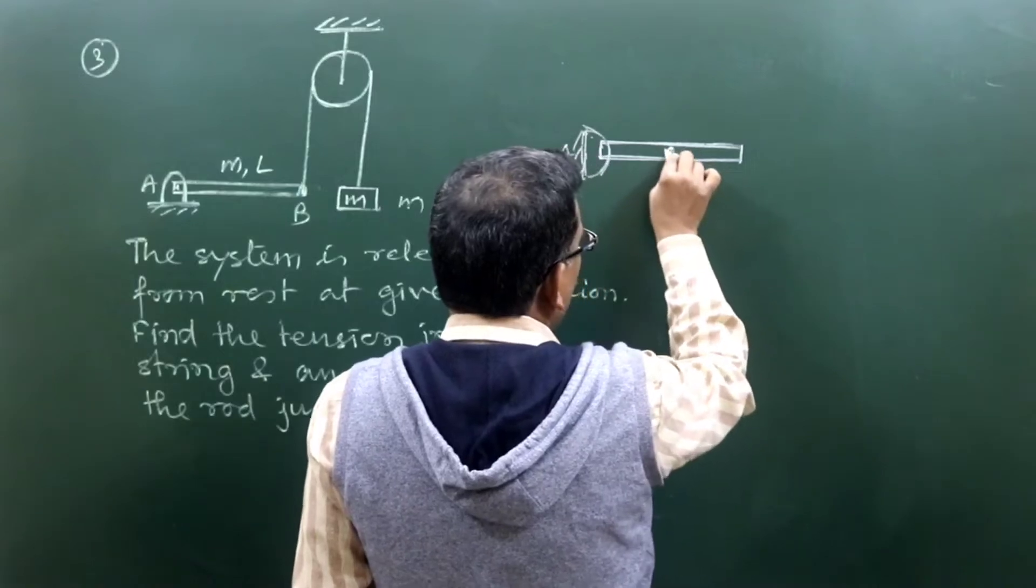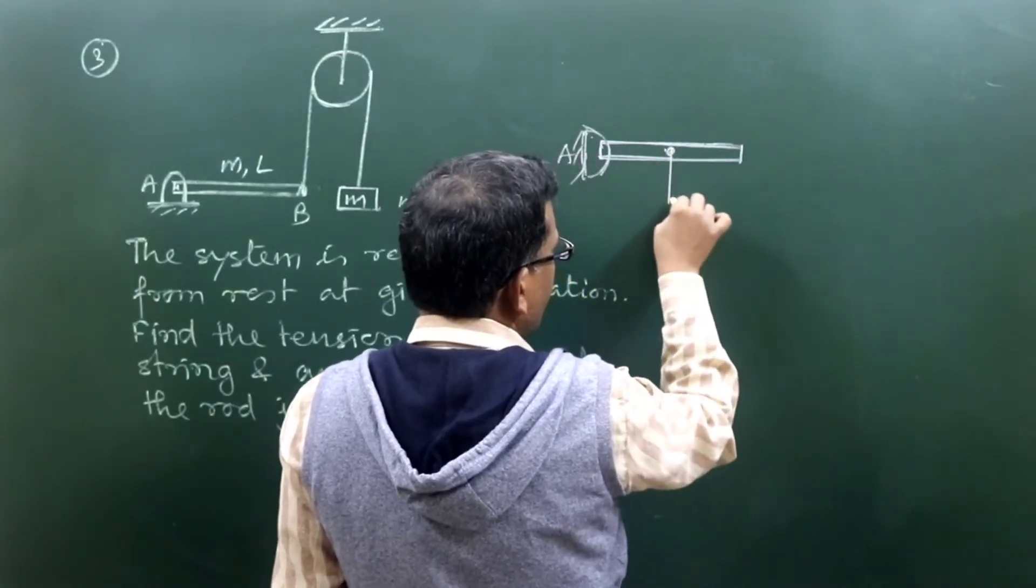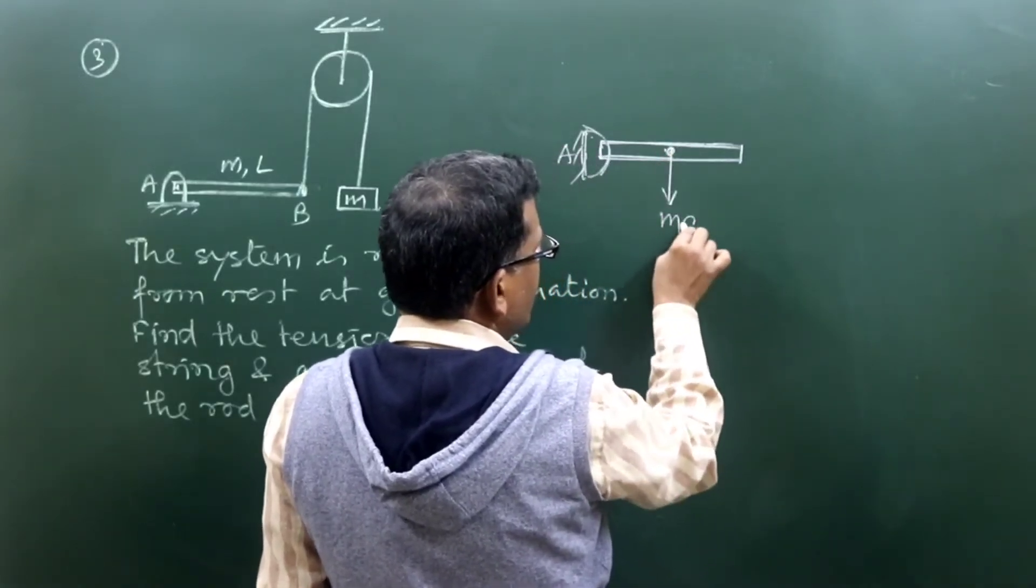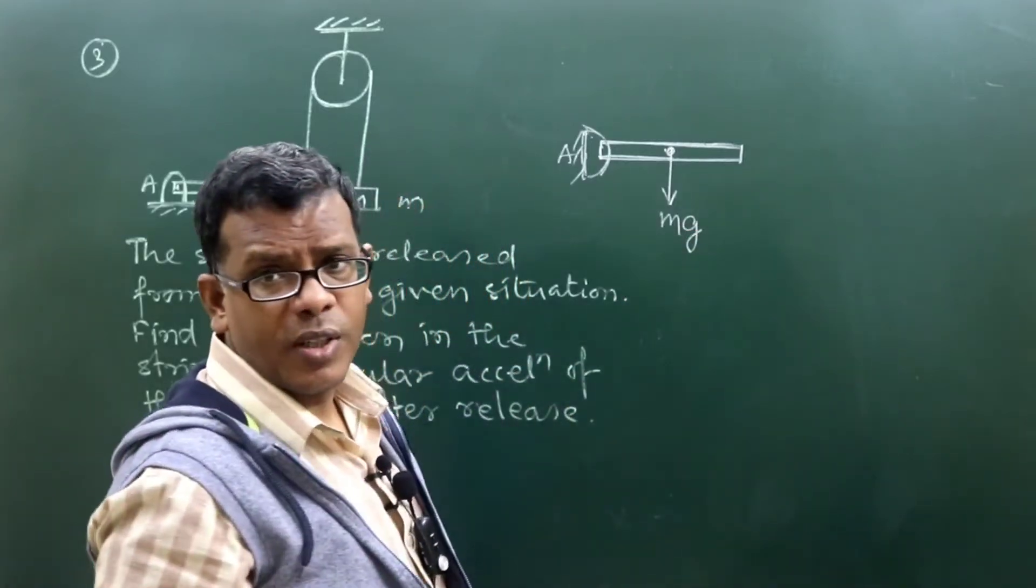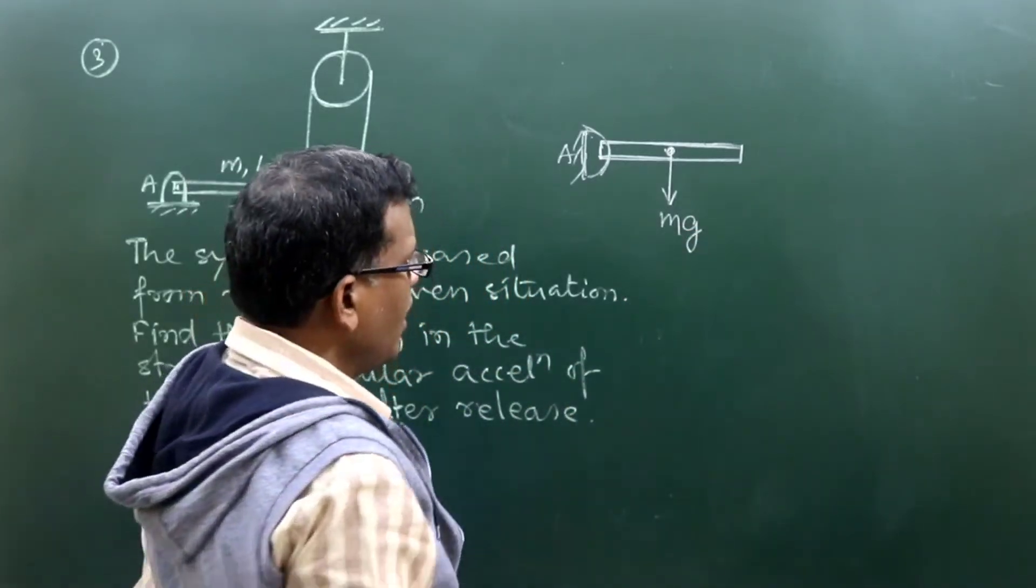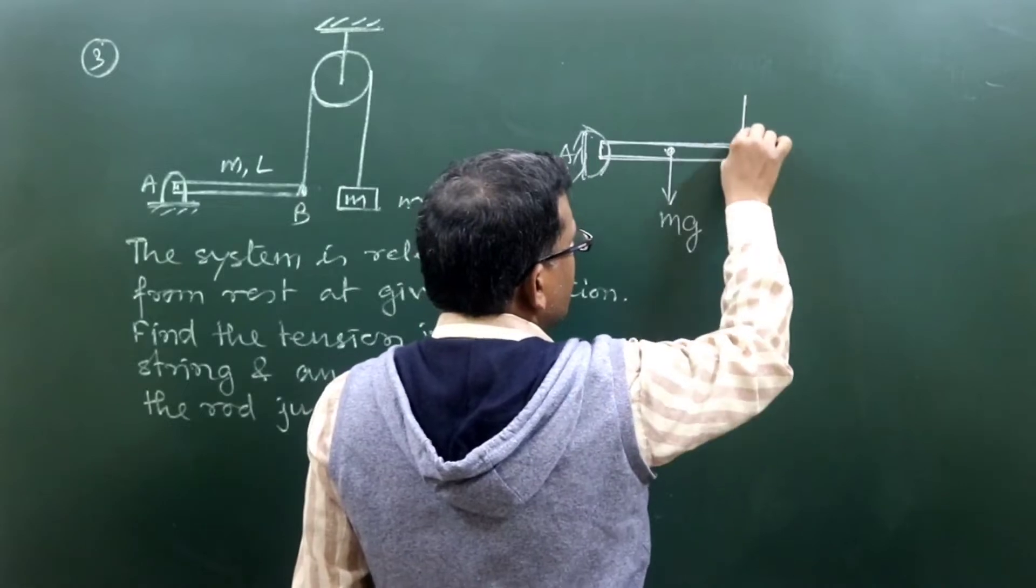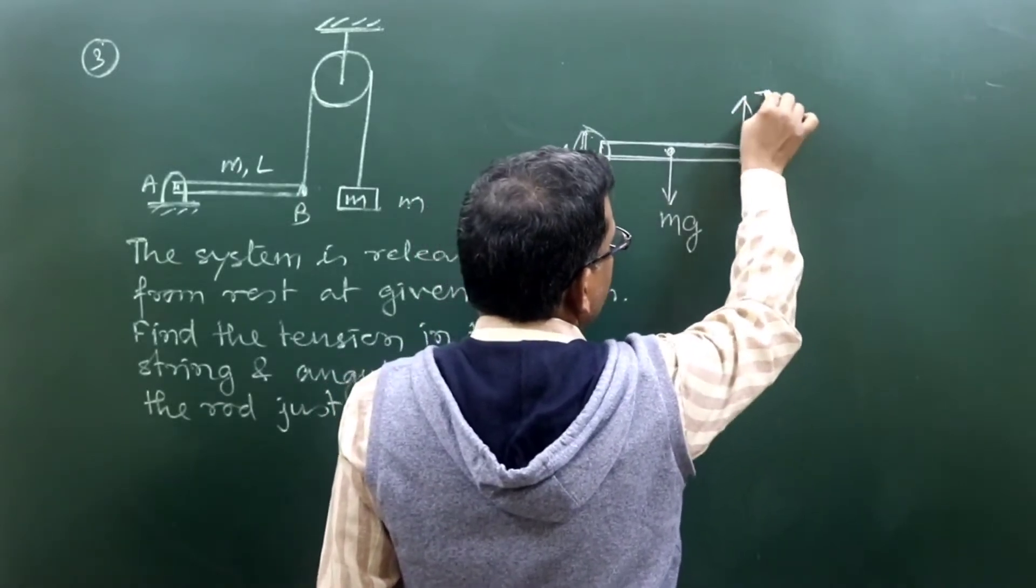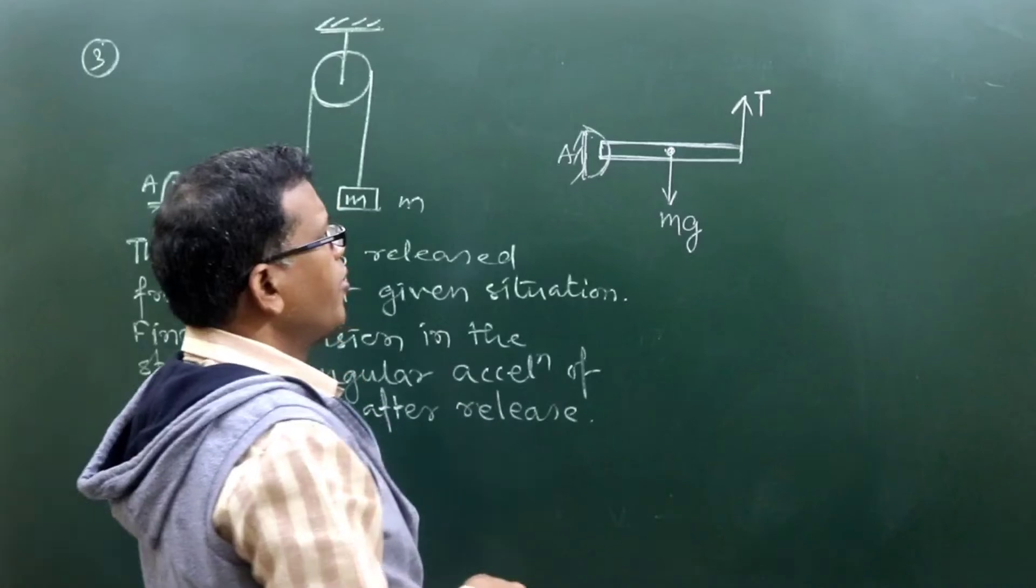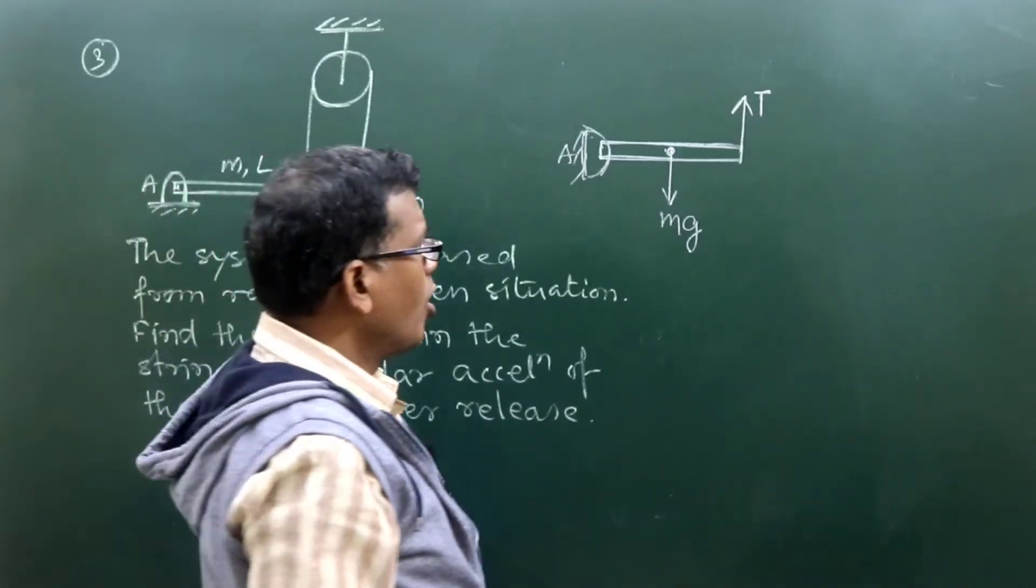We know that the rod has mass M, so its weight Mg must act through the center of the rod like this. And tension in the string should act in this direction. This should be the FBD of the rod.